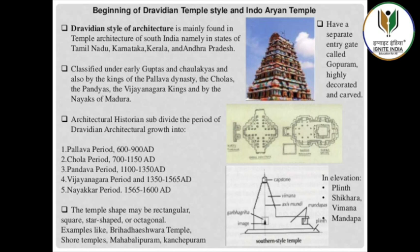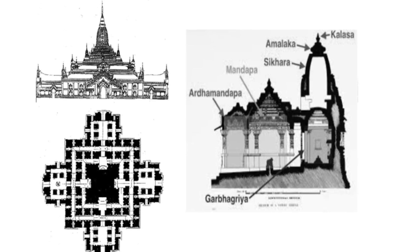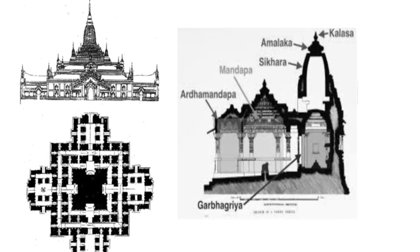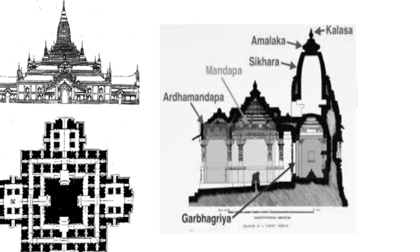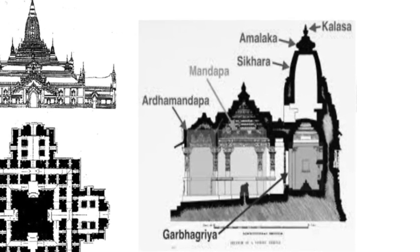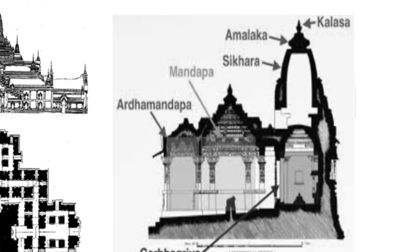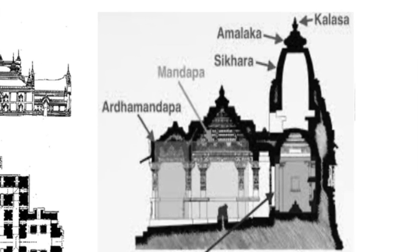The basic form of the Hindu temple comprises the following. The Sanctum or Garbhagriha, literally meaning 'womb house,' was a small cubicle with a single entrance which grew into a larger chamber in time. The Garbhagriha is made to house the main icon.